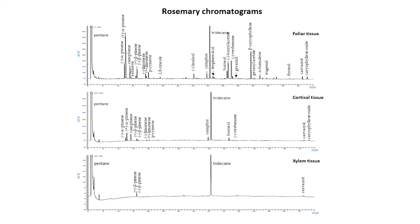Three different chromatograms showing specific terpene profiles result from the analysis of the folia, cortical, and xylem tissue of rosemary.